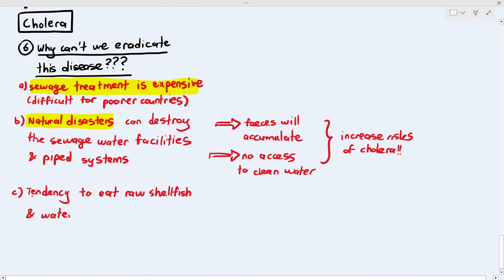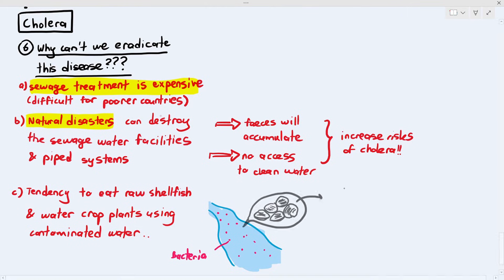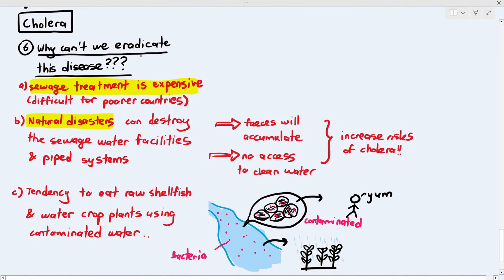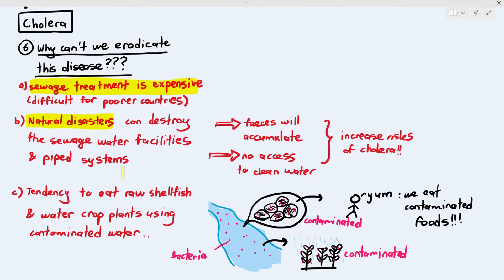Another issue also is people have a tendency to eat raw shellfish such as oysters and cockles and we also water our crops using the contaminated water. So, when we eat the contaminated raw fish, because raw shellfish contain the bacteria and because it's raw, you did not cook it, you did not kill the bacteria inside the shellfish and then the bacteria enters our body. If we use the contaminated river water to nourish and water our crop plants, the crop plants will now contain the bacteria. And if we don't wash the fruits or vegetables before eating them, we are also ingesting the contaminated food. These are some reasons why we cannot totally eradicate the disease yet.